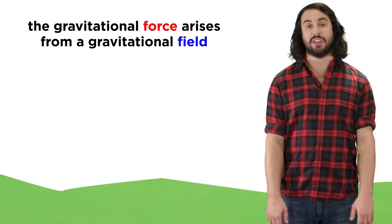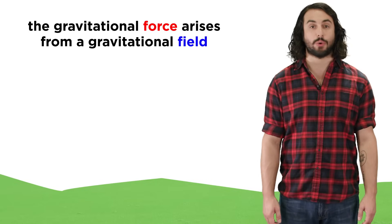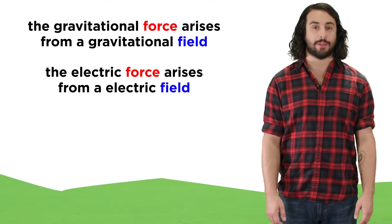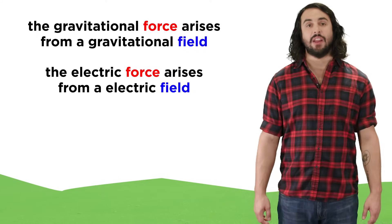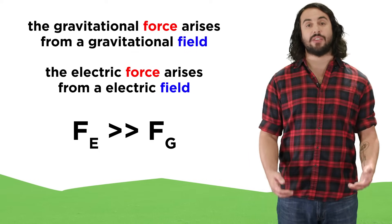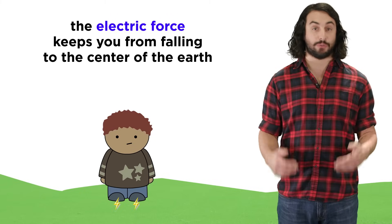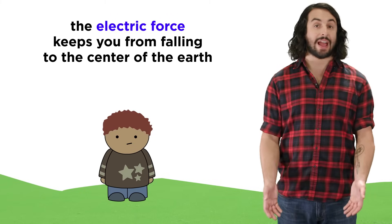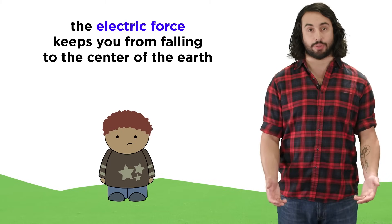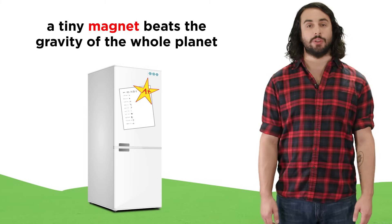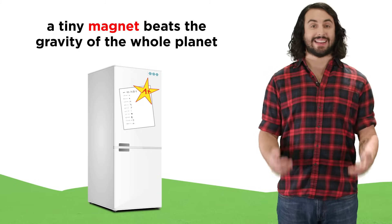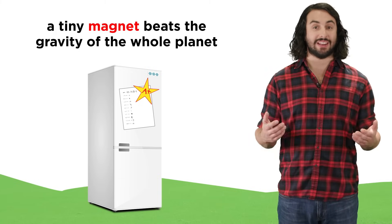Just as a gravitational field is what allows the gravitational force to propagate, it is an electric field that allows the electric force to propagate, however as we said, the electric force is much stronger than gravity. This is evidenced by the fact that the repulsion between particles in your feet and particles in the ground is more than strong enough to keep you from plummeting towards the center of the earth. We can also use a cheap refrigerator magnet to keep a piece of paper on the fridge against the gravitational pull of the entire planet.